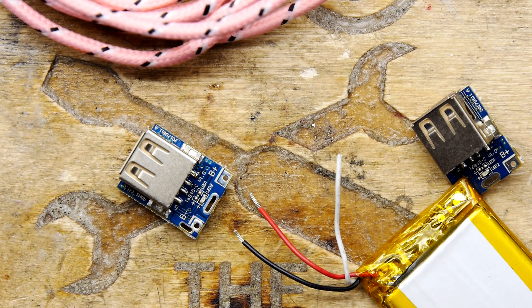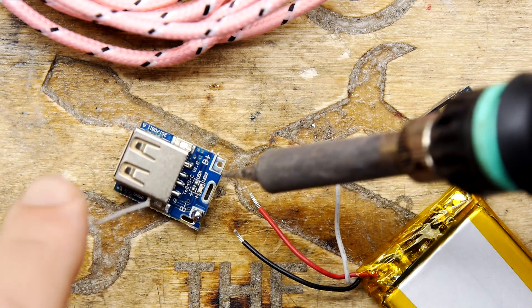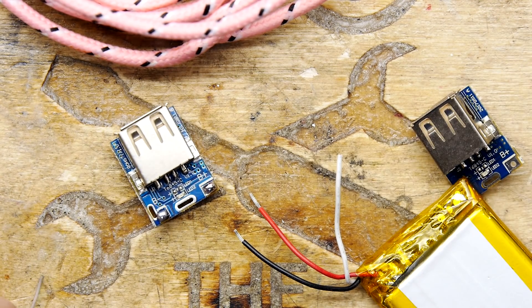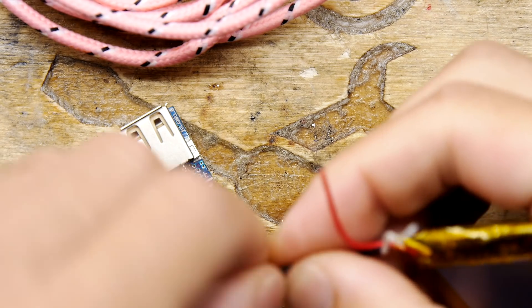We're just going to simply tin those and solder them that way. So if you're doing this at home, you're going to want to be a bit careful you get the polarity right, because you don't want any lithium battery blowy-uppy disasters. And if you're doing your tinning, just give it a twist too.